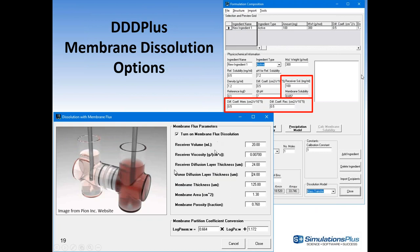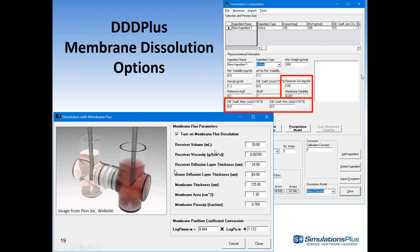All inputs are available: receiver volume, viscosity of the receiver fluid, diffusion layer thicknesses, membrane thickness, membrane area, and membrane porosity. We assume the membrane is filled with a phospholipid-type material, using a correlation that relates log P in octanol/water to the membrane partition coefficient. The receiver solubility can be entered manually, as different companies may use different proprietary fluids. You can also set the diffusion coefficients.